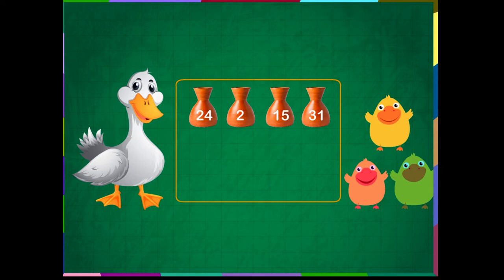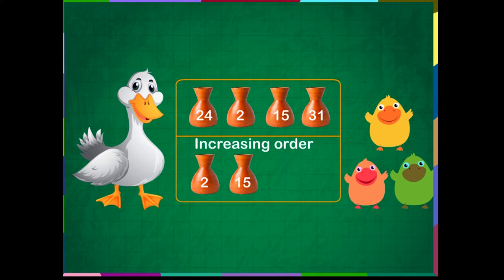We can arrange these flower vases in an increasing order of the numbers written on them. So, the vase with number 2 comes first, then 15, then 24, and at last, the vase with number 31.